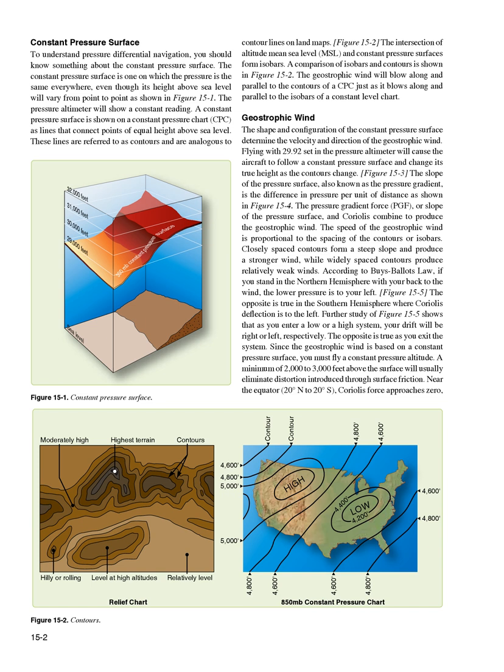The speed of the geostrophic wind is proportional to the spacing of the contours or isobars. Closely spaced contours form a steep slope and produce stronger wind, while widely spaced contours produce relatively weak winds. According to Buys-Ballot's law, if you stand in the northern hemisphere with your back to the wind, the lower pressure is to your left. Figure 15-5 shows the opposite is true in the southern hemisphere where Coriolis deflection is to the left. As you enter a low or high system, your drift will be right or left, respectively. The opposite is true as you exit the system.